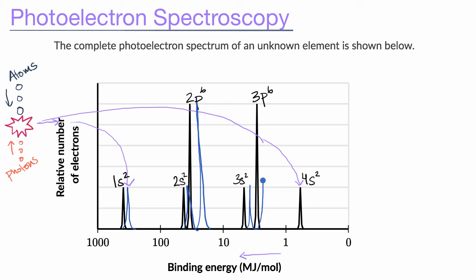The 3p6 spike is also going to be a little bit to the right. And for the 4s subshell — it doesn't have two electrons there. It only has one, because potassium only has 19 electrons, not 20. So that spike will be a little bit to the right with a lower binding energy, and only half as high because there's only one electron, not two. That would be the photoelectron spectrum of potassium, roughly speaking.